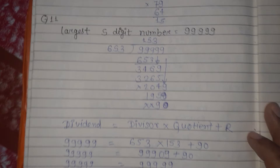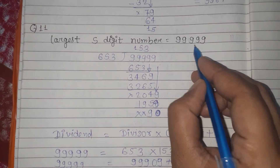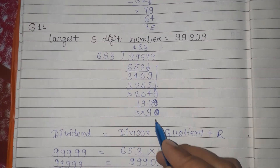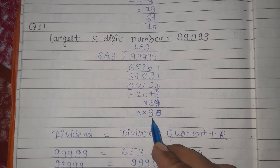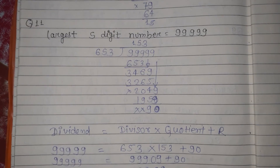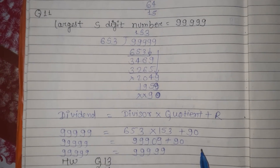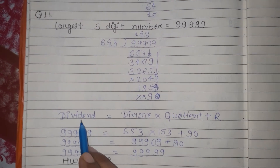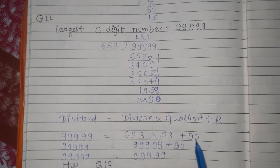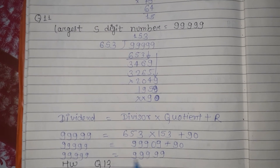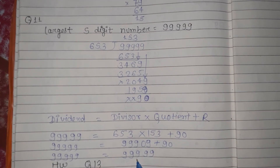Similarly, in question number 11, we take the largest 5-digit number and divide it by 653. The last remaining number is our remainder. We also need to check the answer in question number 11 using the formula: dividend is equal to divisor into quotient plus remainder. Put in all values and you will see that LHS and RHS are equal, as you can clearly see in the solution.